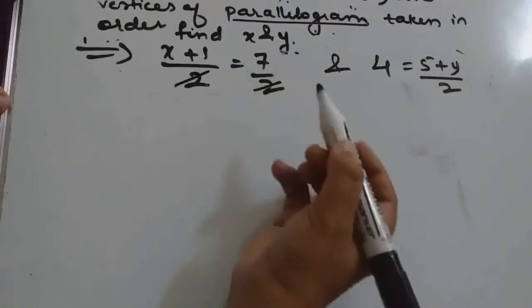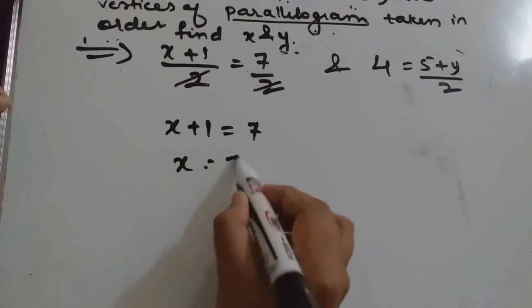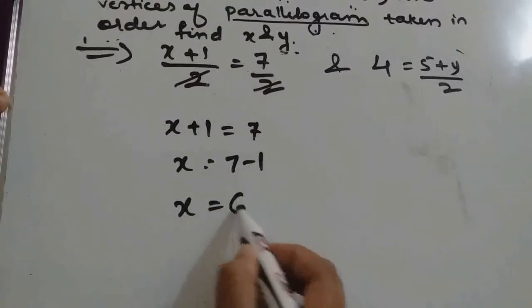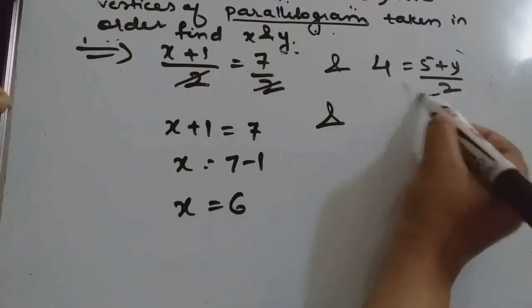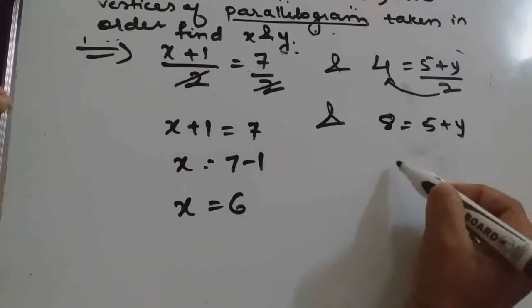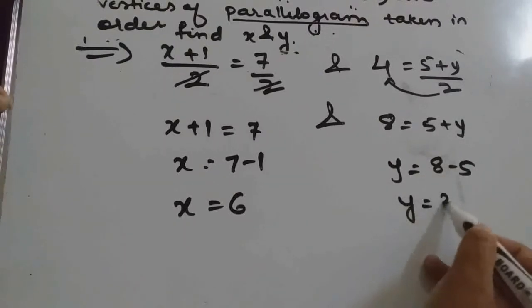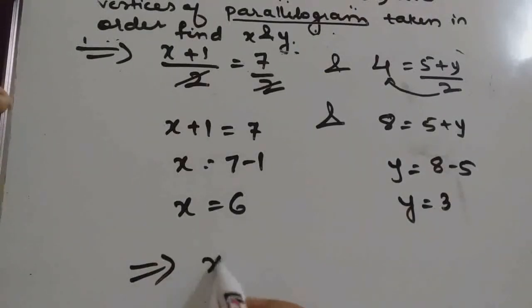So, 2 will be cancelled. x + 1 equals 7, x will be 7 minus 1, that is 6. And here, 2 will come to this side: 8 equals 5 + y. So y will be 8 minus 5, that is 3. So x equals 6 and y equals 3.